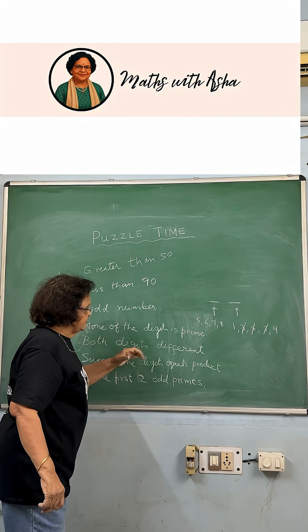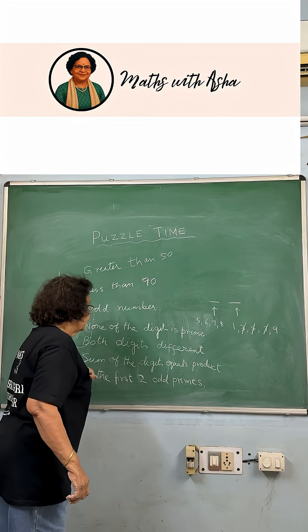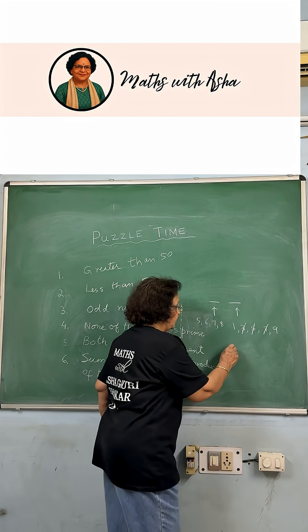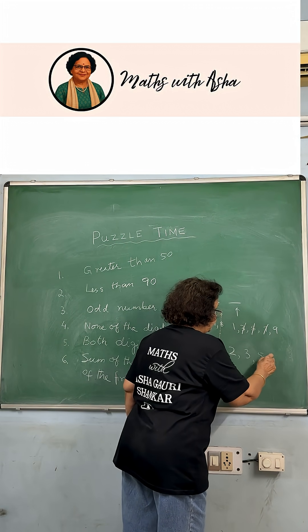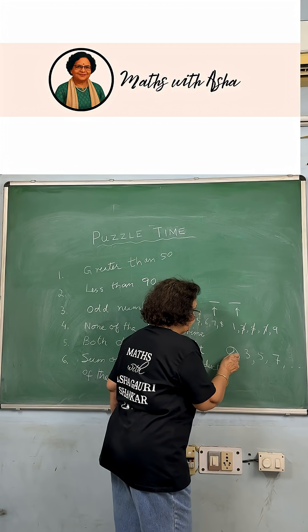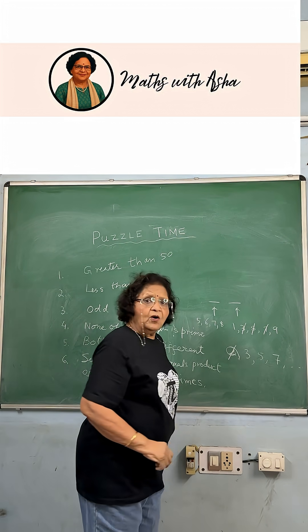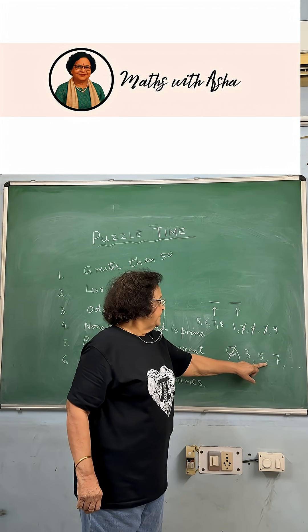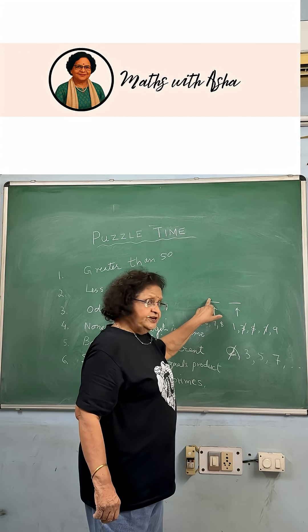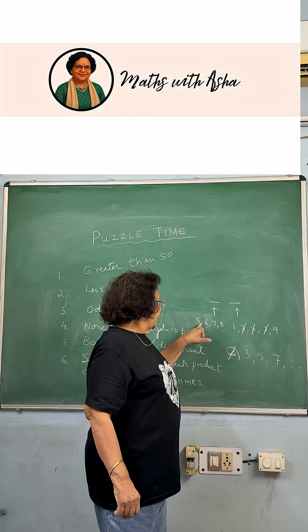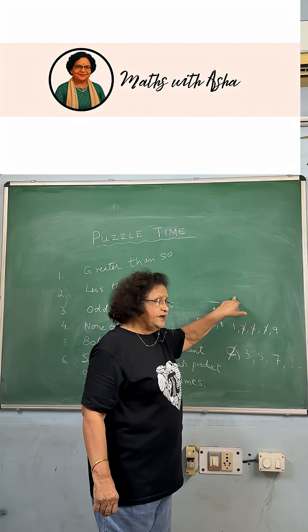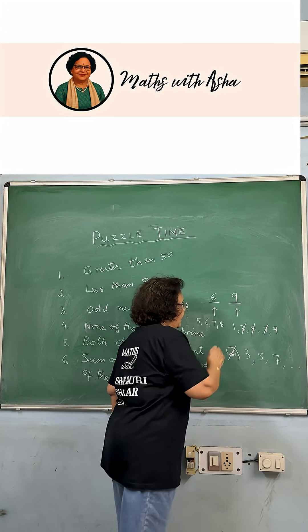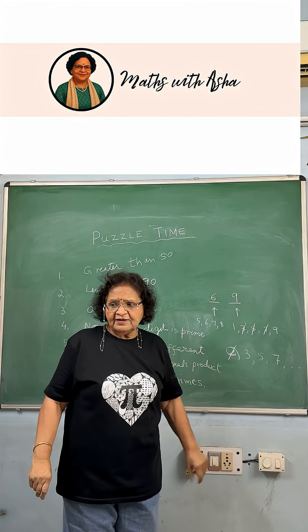Now both the digits are different. The units digit is 1 or 9. The sum of the digits equals the product of the first two odd primes. The prime numbers are 2, 3, 5, 7 and so on — 2 is even so we rule it out. The first two odd primes are 3 and 5, so the product is 15. Since the tens digit is 5, 6, 7, or 8, the units digit obviously cannot be 1, so it has to be 9. When the units digit is 9, the tens digit must be 6, because 9 plus 6 is 15.